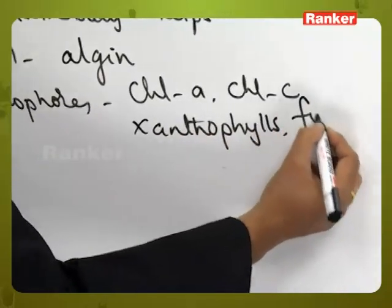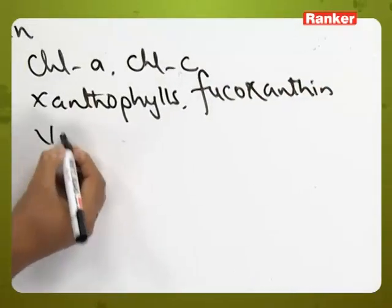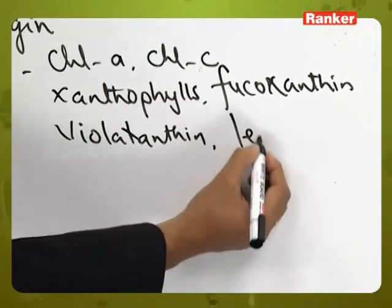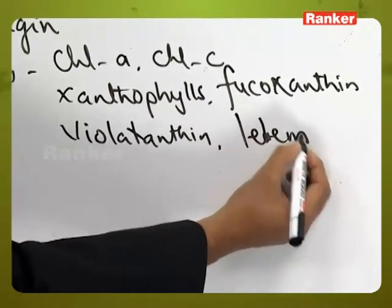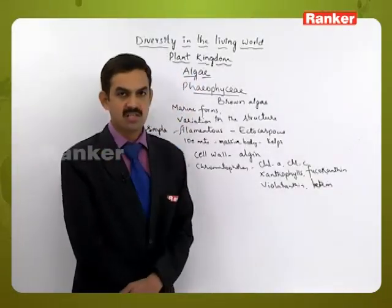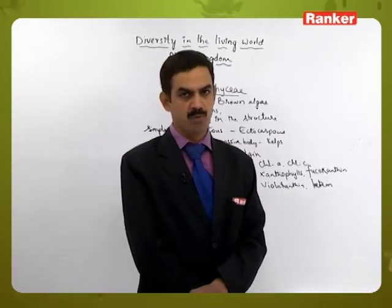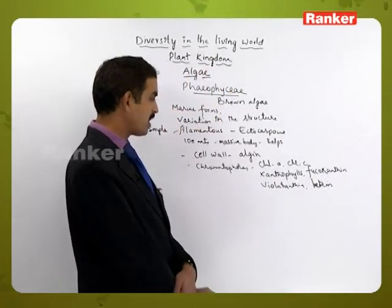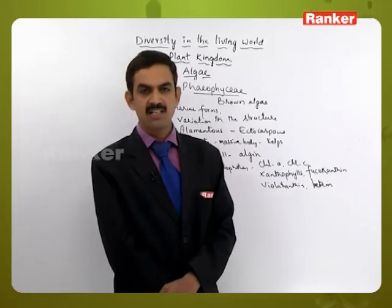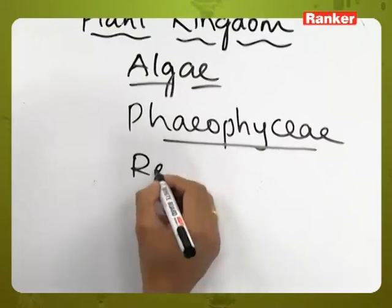Additional pigments present in the chromatophores include fucoxanthin, violaxanthin, and lutein. These are the different pigments in the chromatophores concerned with the photosynthetic process. The brown color is mainly due to fucoxanthin present in the cells of Phaeophyceae members.